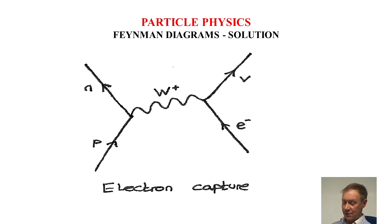So the line on the left, P, goes in. Wavy line W plus comes off it and the neutron is created.